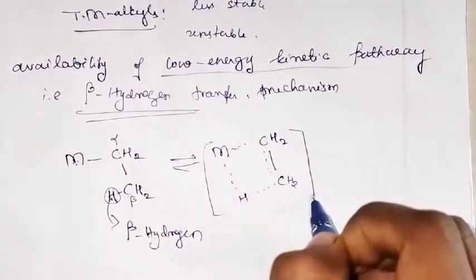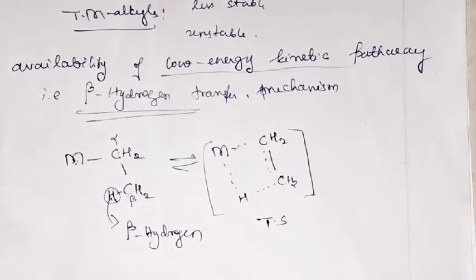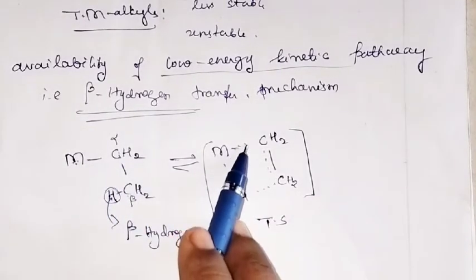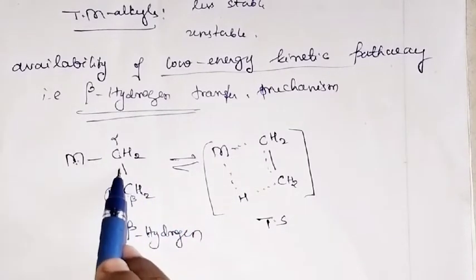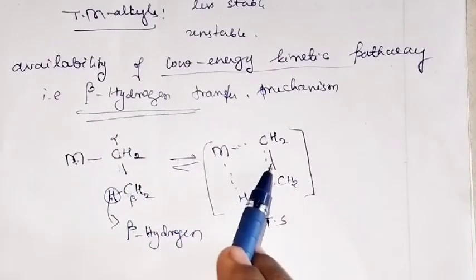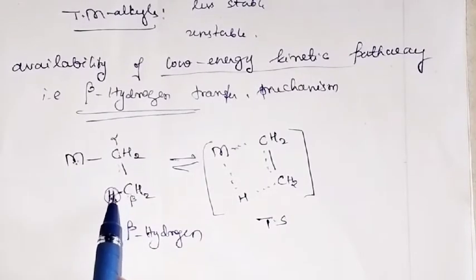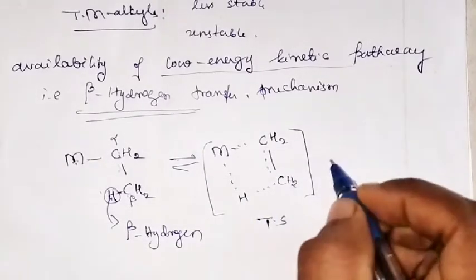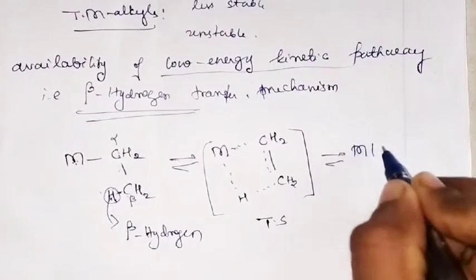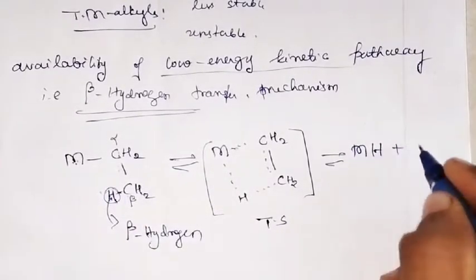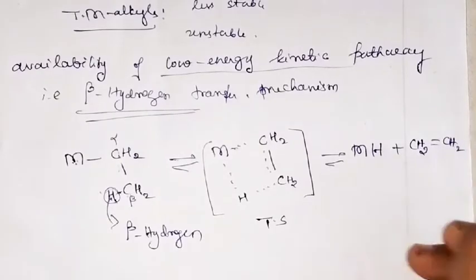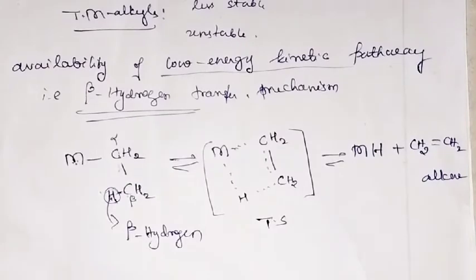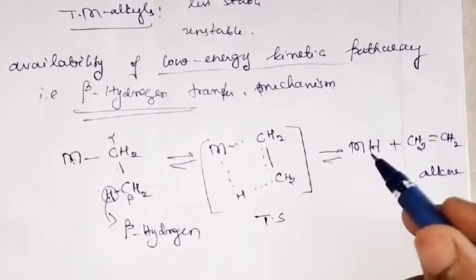This is the transition state. The bond between M and CH2 breaks — represented by a dotted line — and this bond shifts to form a double bond. So there is formation of an M-H bond along with the formation of CH2=CH2. That is, alkene gets eliminated and a metal hydride is formed.